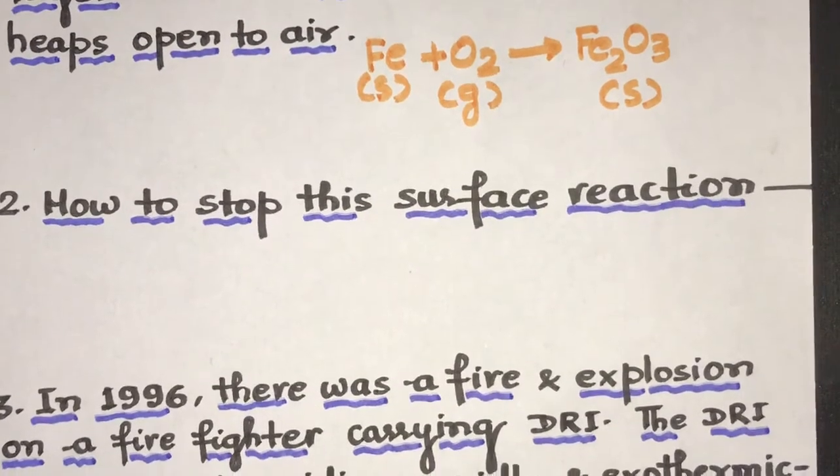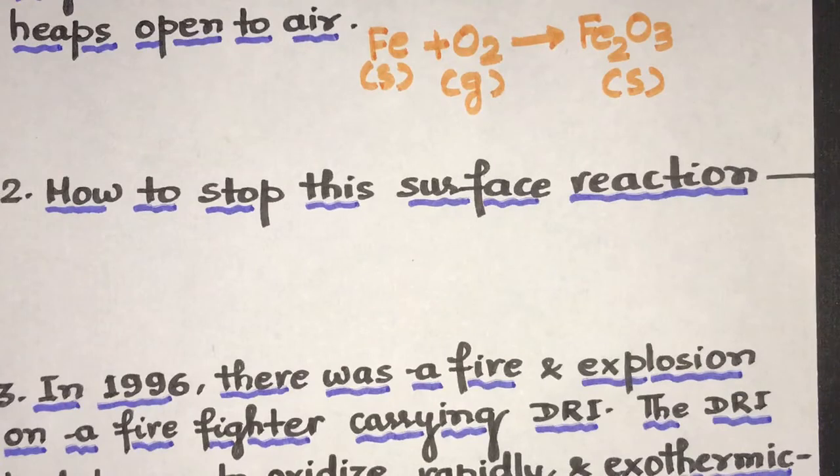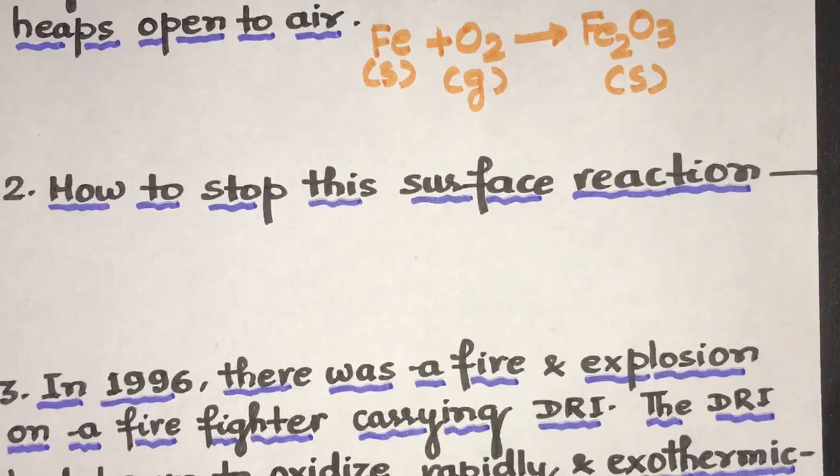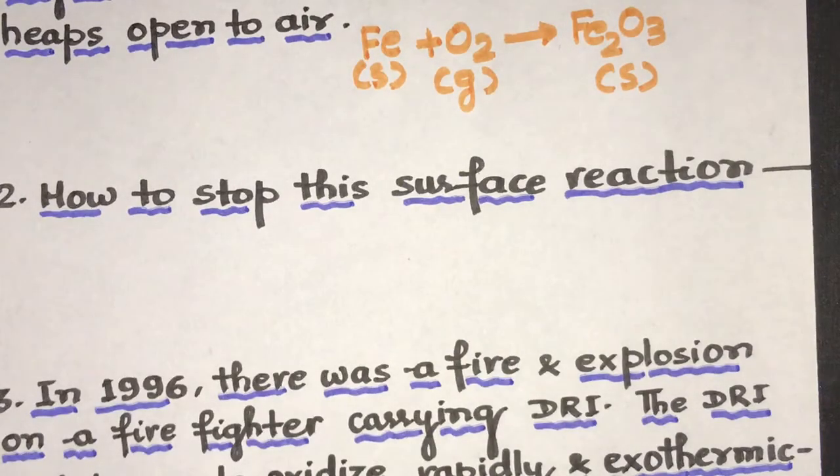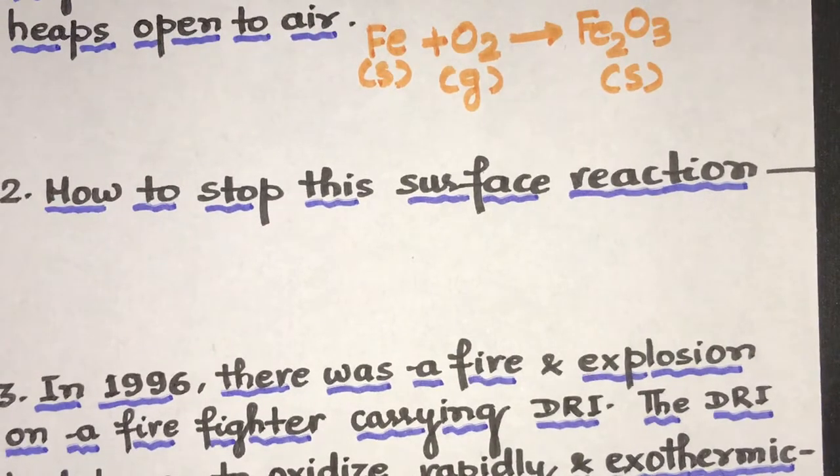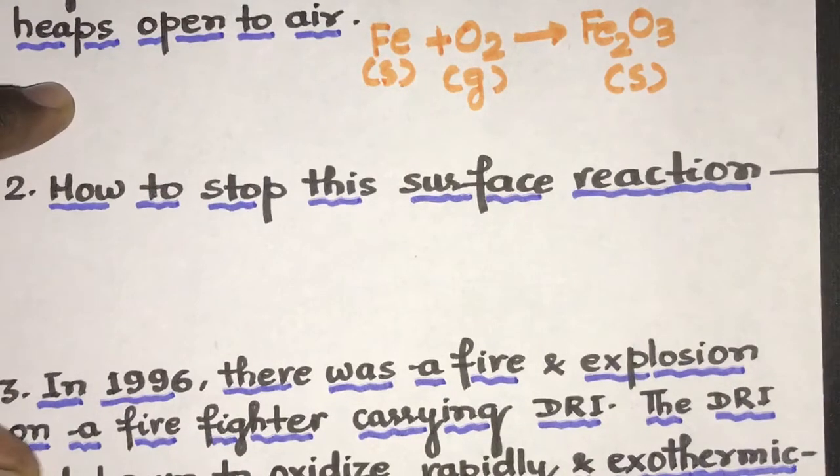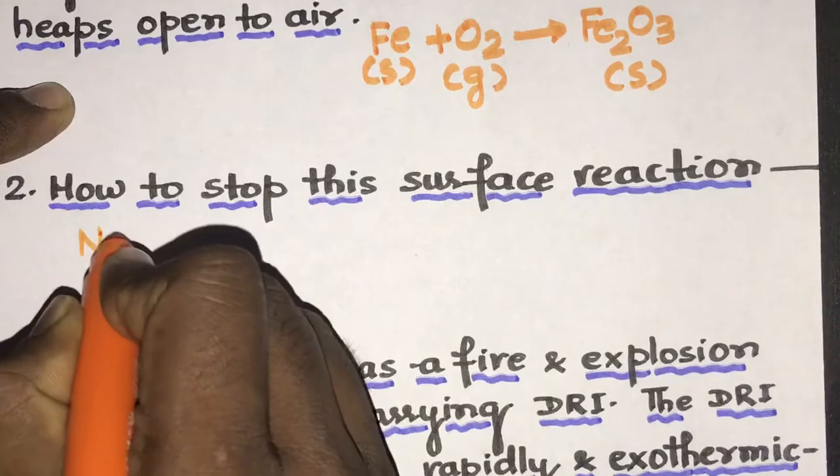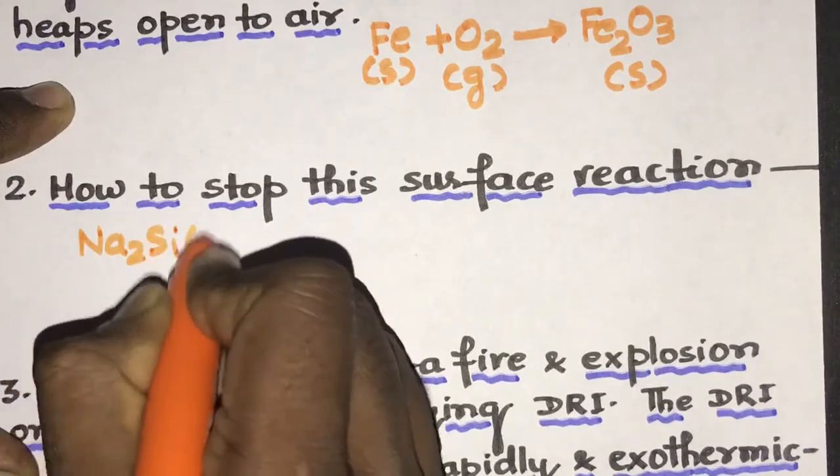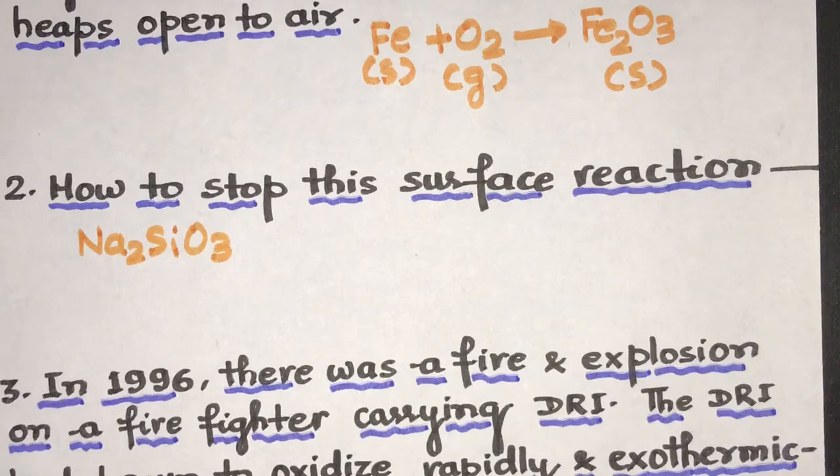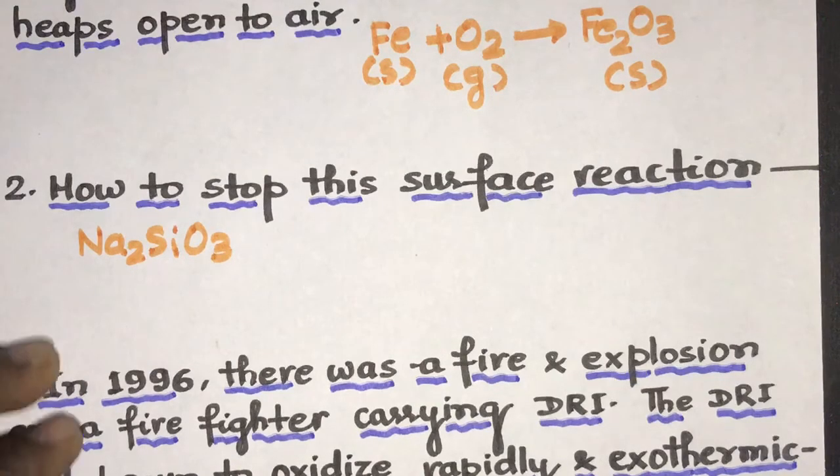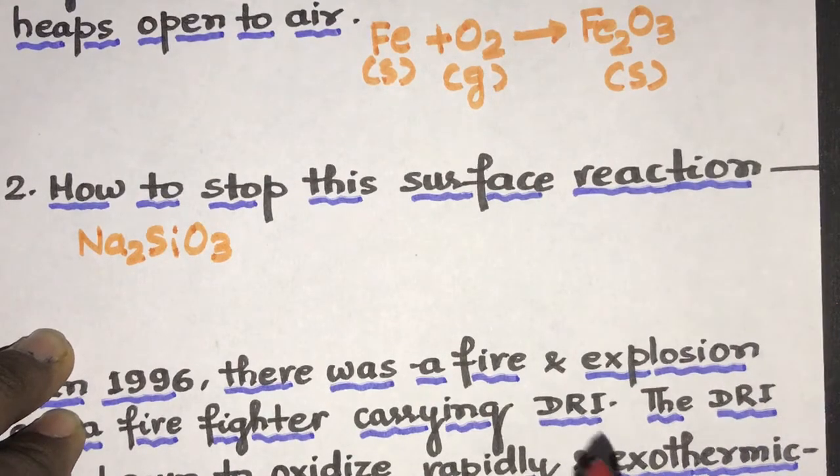Now coming to the next. How to stop this surface reaction? So what is the method used to stop this oxidation of iron at the surface? So for this we use sodium silicate, that is Na2SiO3.